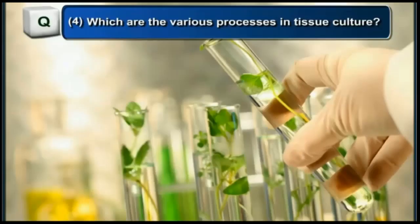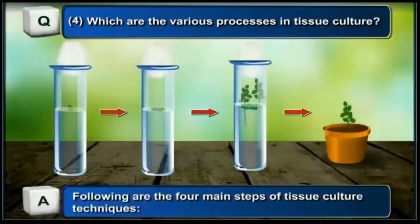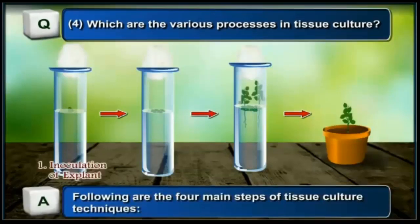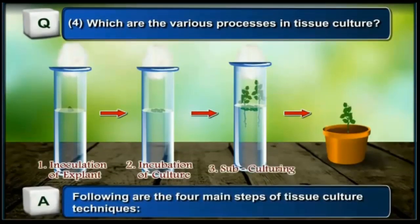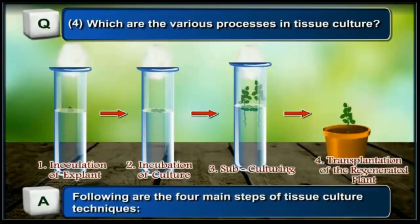What are the processes involved in tissue culture? There are basically four main steps. First is inoculation of the explant — a part of the plant exposed to various conditions. Second is incubation of the culture. Third is subculturing, allowing it to grow in a test tube or external environment. Fourth is transplantation of the regenerated plant, which will be a clone of the mother plant.